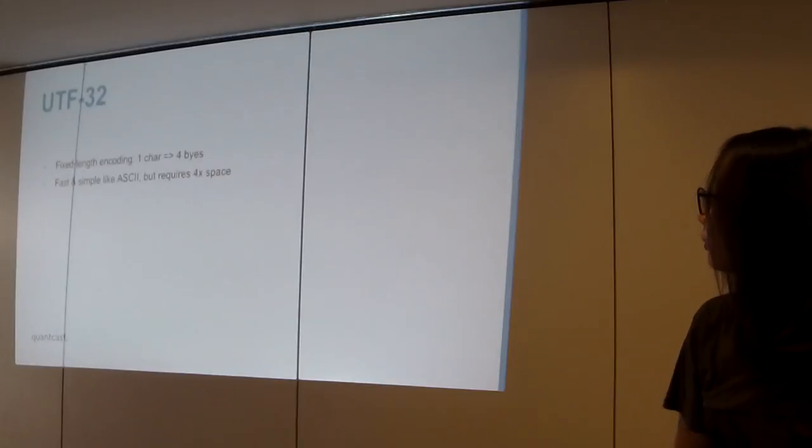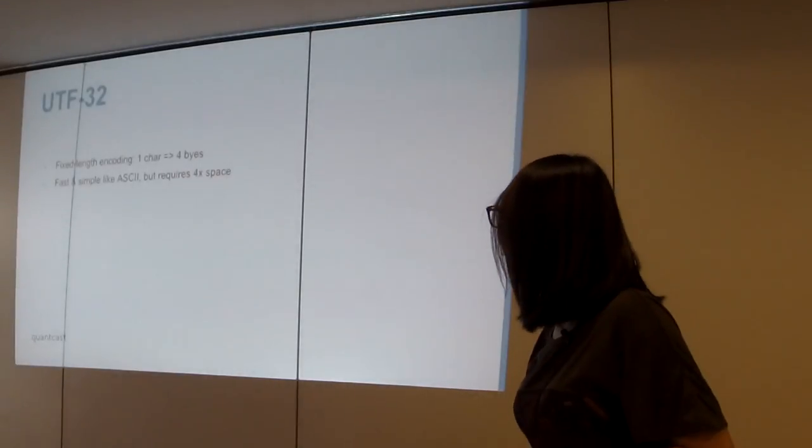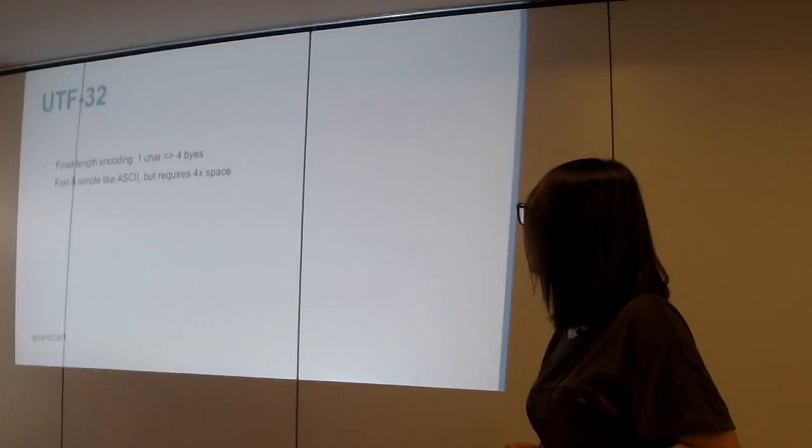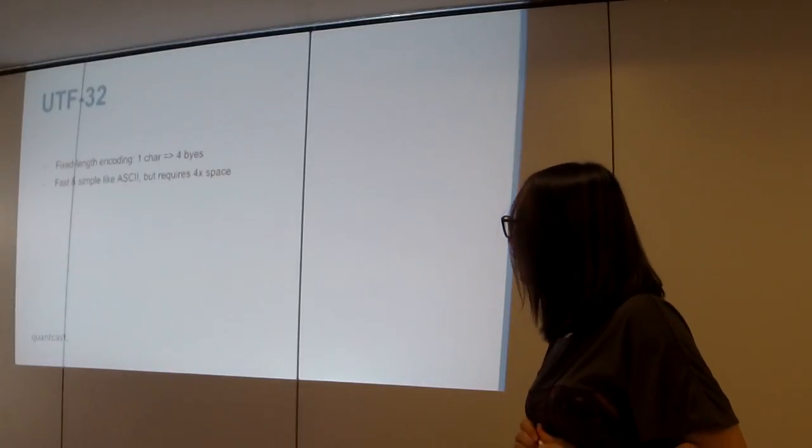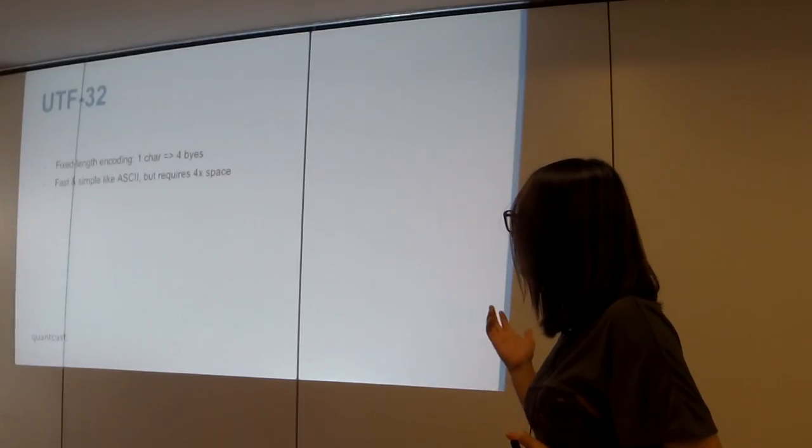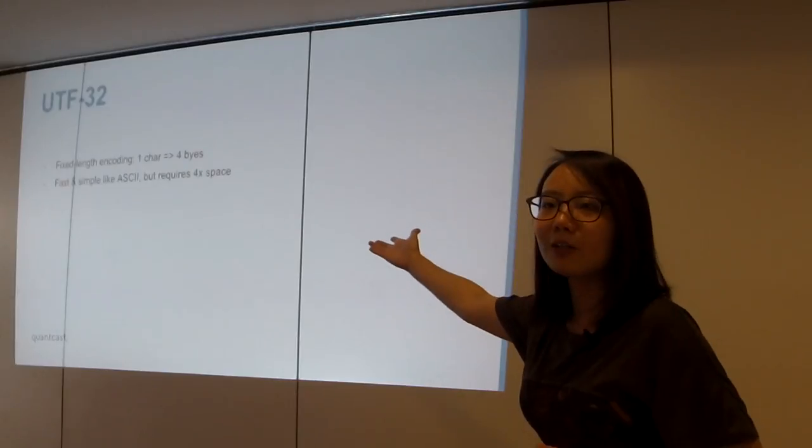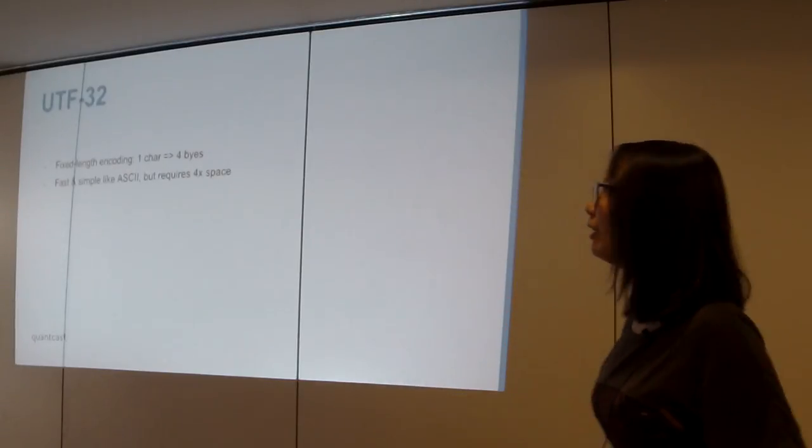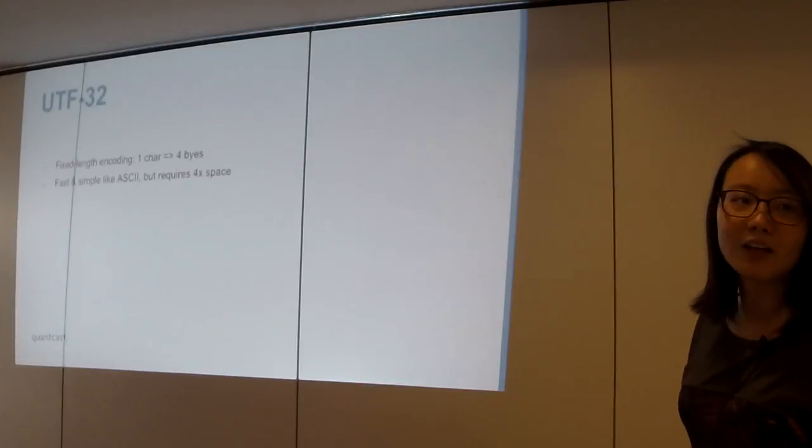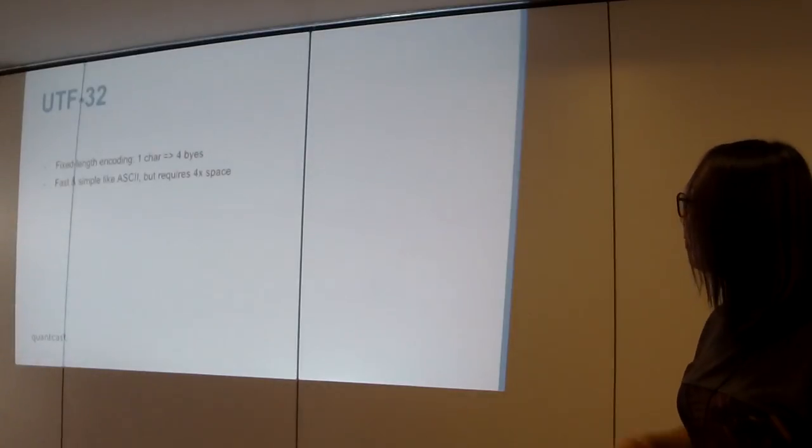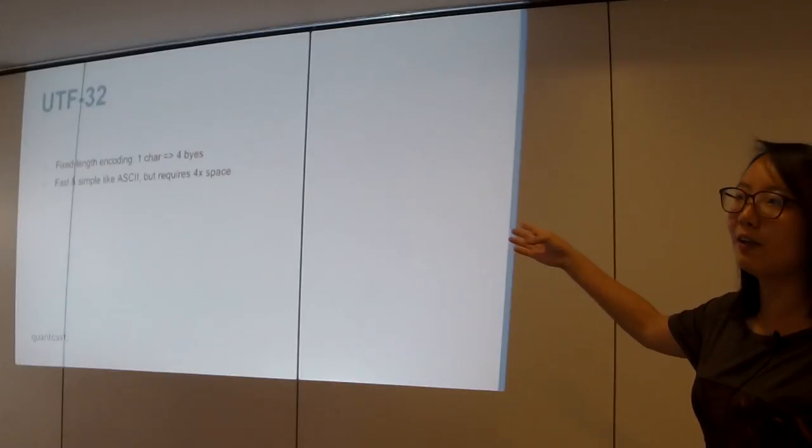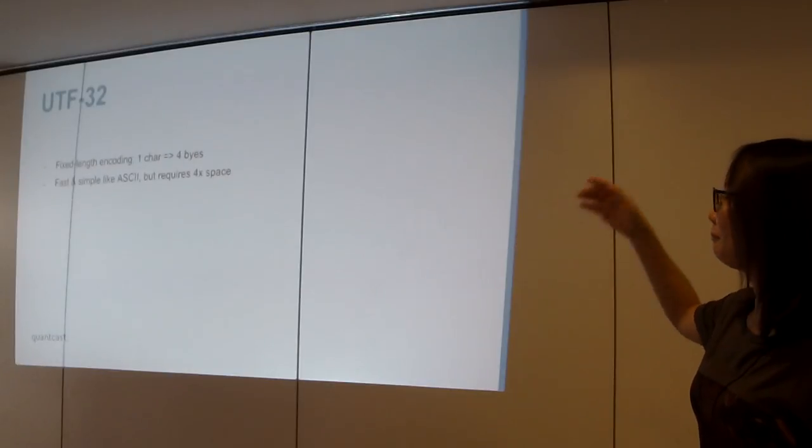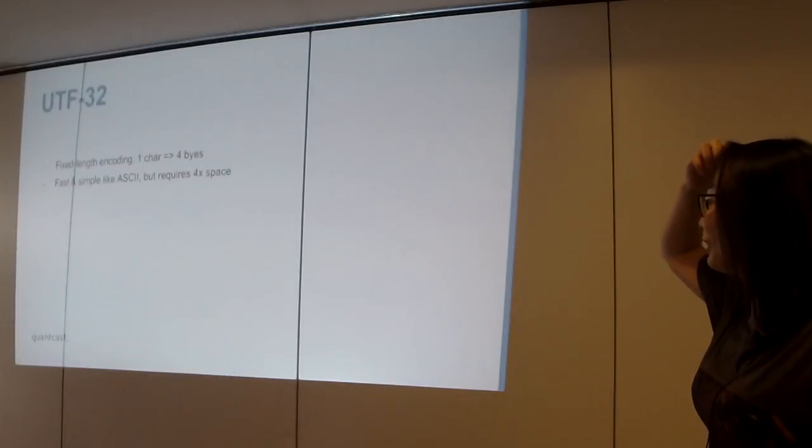So there's also UTF-32, which is a fixed-length encoding scheme that always uses four bytes. And it's fast and simple like ASCII. Why? Because it's capable of mapping to every code point in the unique code definition. And then, but it is very space inefficient. Inefficient, yes.